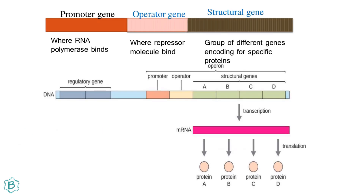Here it is showing how a gene structure looks, having a promoter region, an operator region, and structural genes. In the promoter region, RNA polymerase binds. In the operator region, the repressor molecule binds. Structural genes are groups of different genes that code for specific proteins.